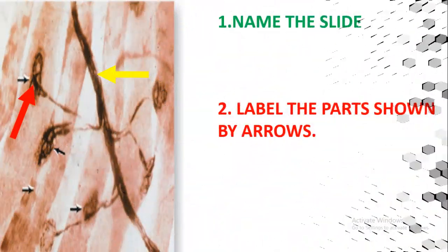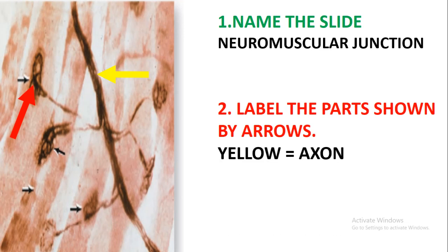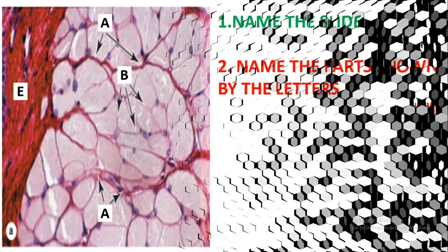Let's move on and look at the next slide. This slide is the neuromuscular junction. Label the part shown by the arrows. The yellow arrow is the axon and the red arrow is the motor end plate.